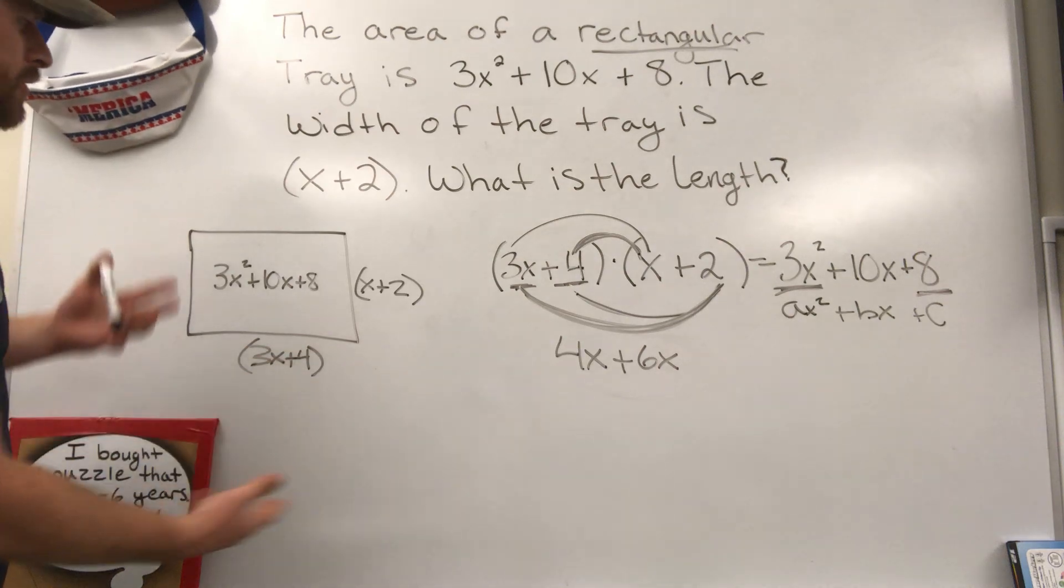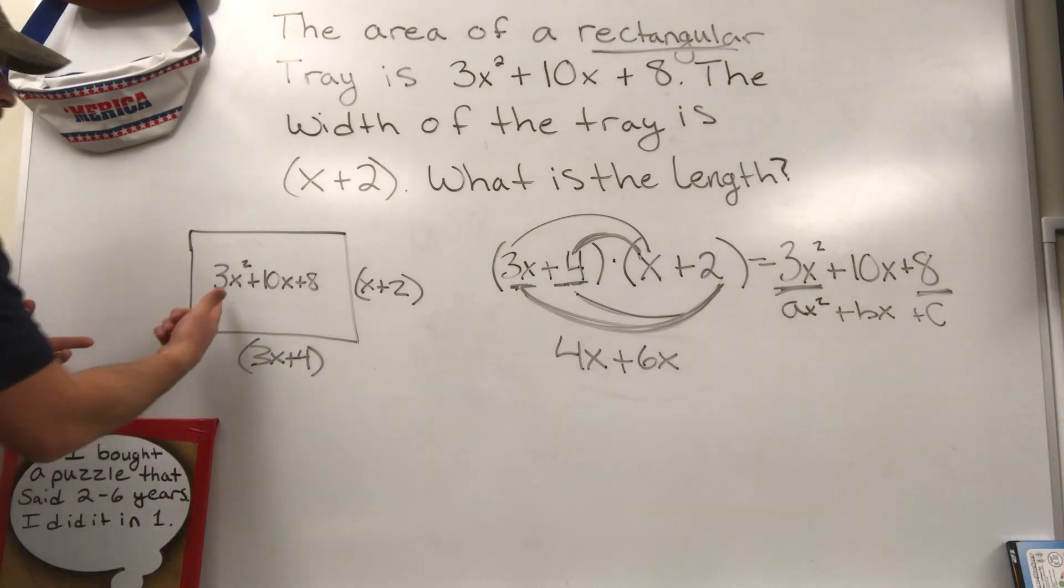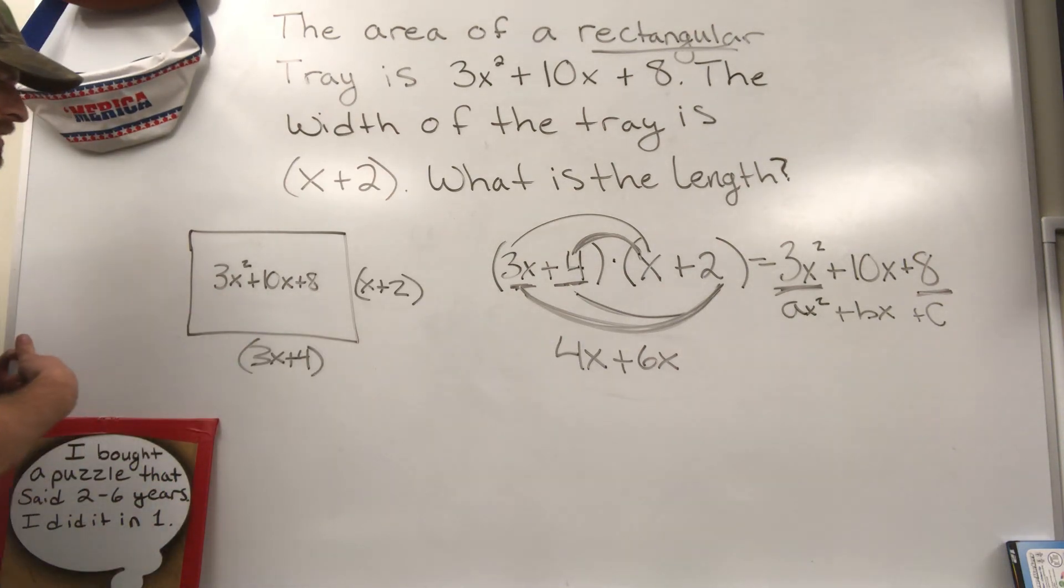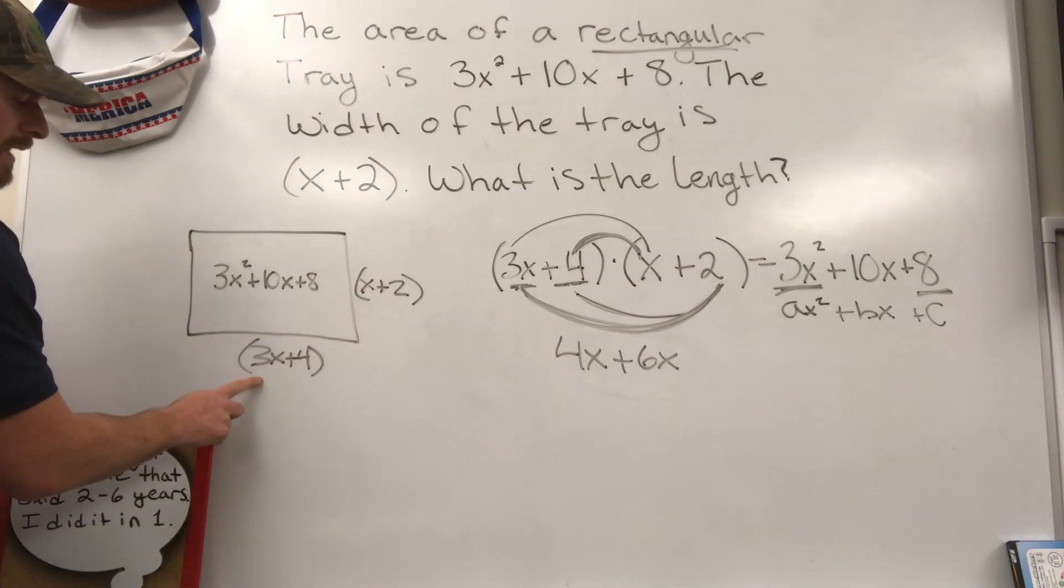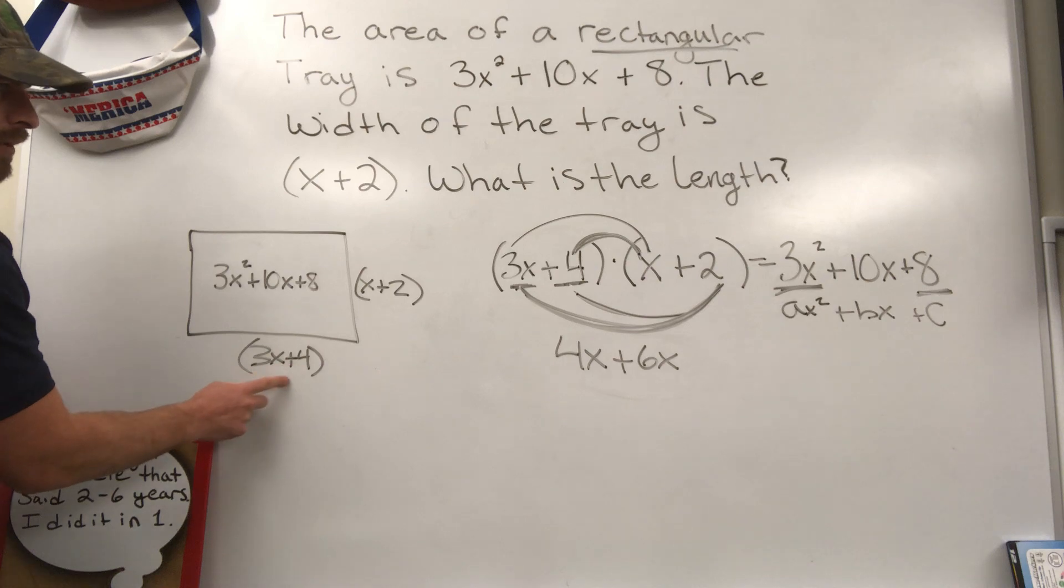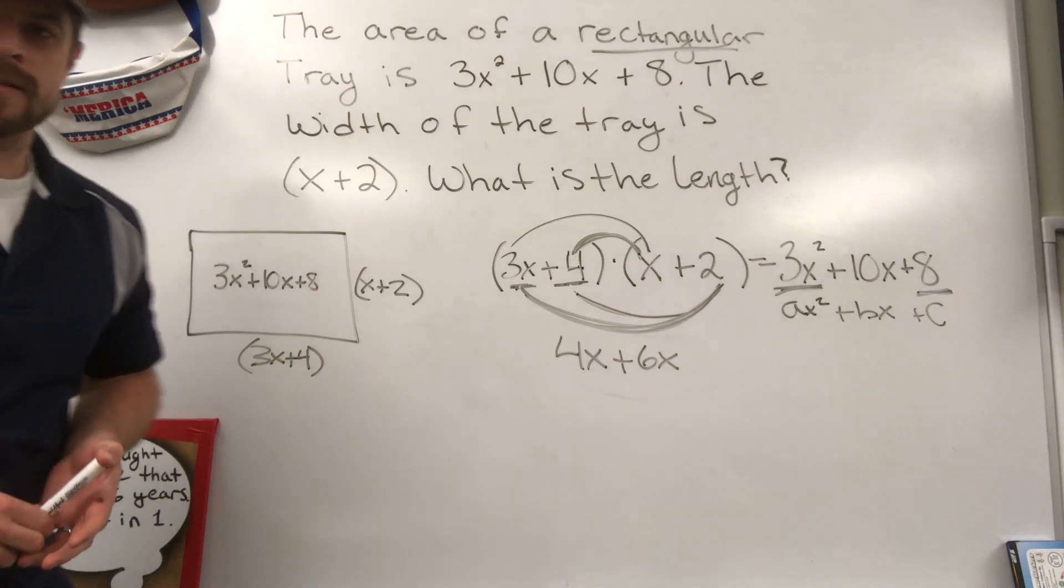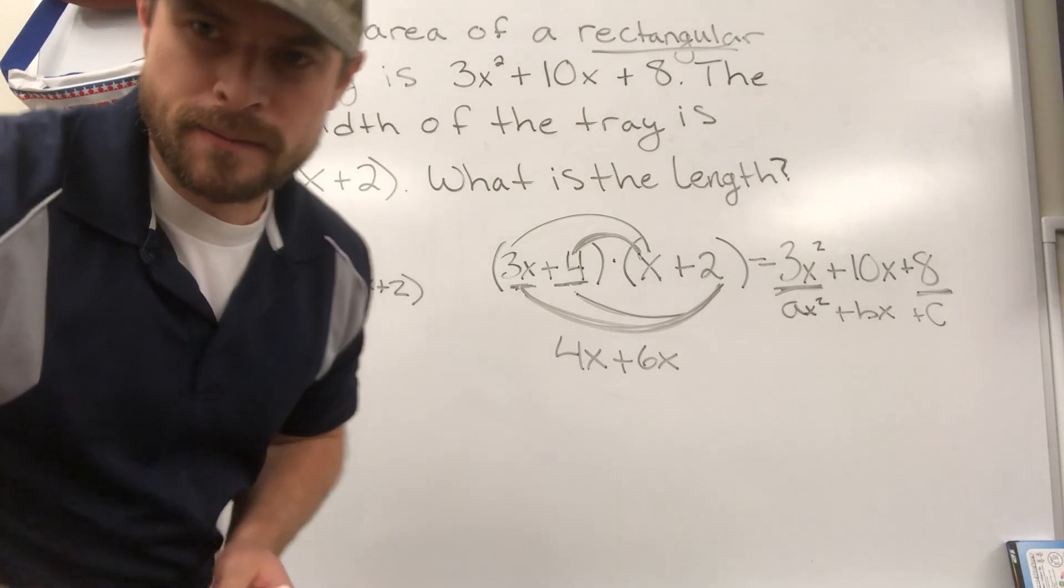So long story short for this problem, if the area is 3x squared plus 10x plus 8 and your width is x plus 2, your length would have to be 3x plus 4. Study hard and good luck on your upcoming test.